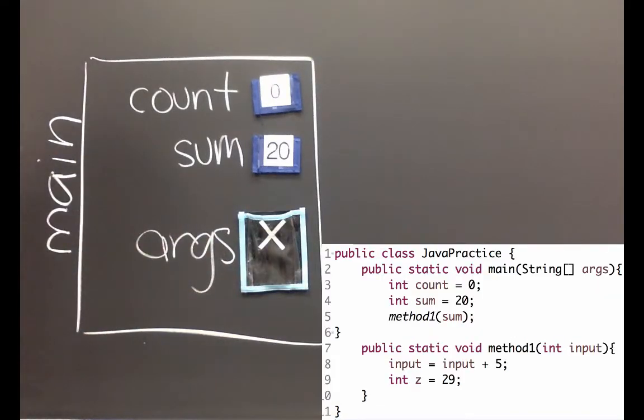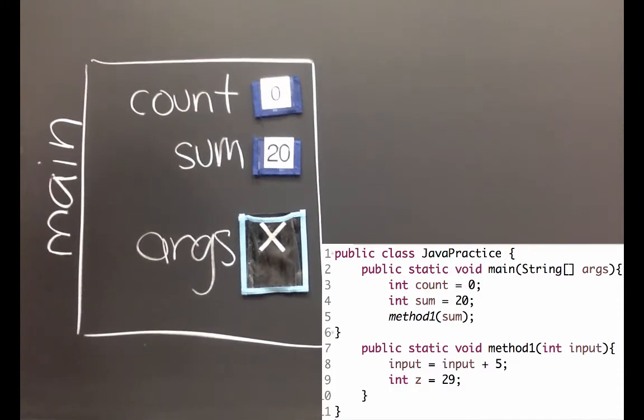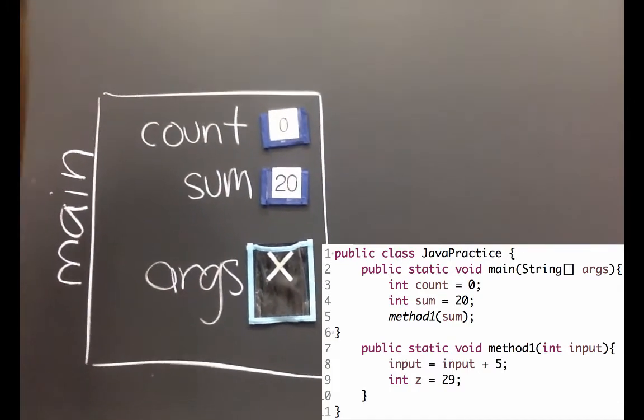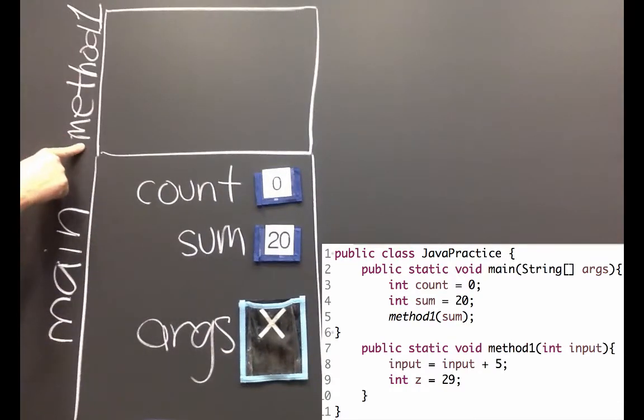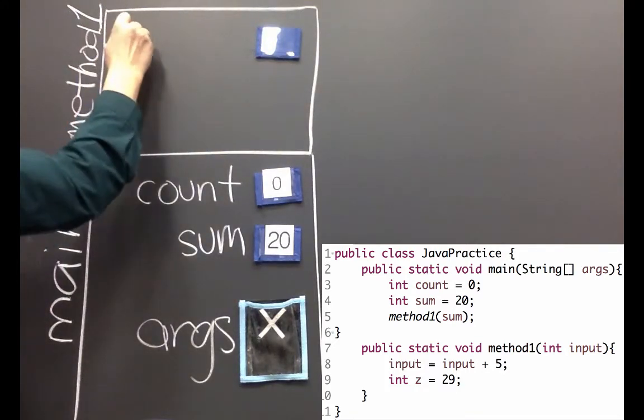Now our main method is going to call another method, method one. We'll draw that stack frame on top of our current main method. Method one takes a variable as input called input, so I'm going to have a variable that can hold an int and it has the name input.